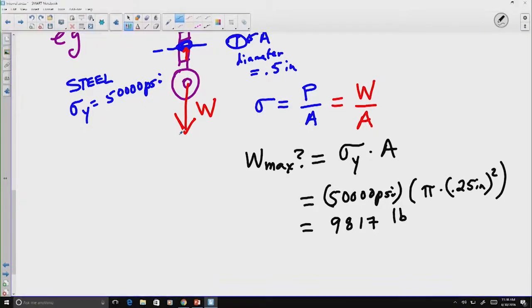This means for this particular bolt, if it's made out of steel, if I put 9,817 pounds on that bolt, I'm in danger of failing. Usually, in structural design, we include something called a factor of safety.